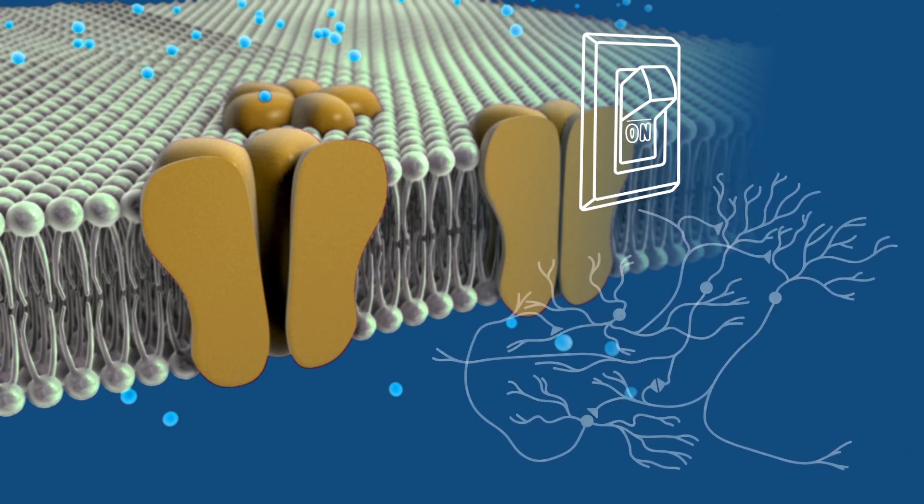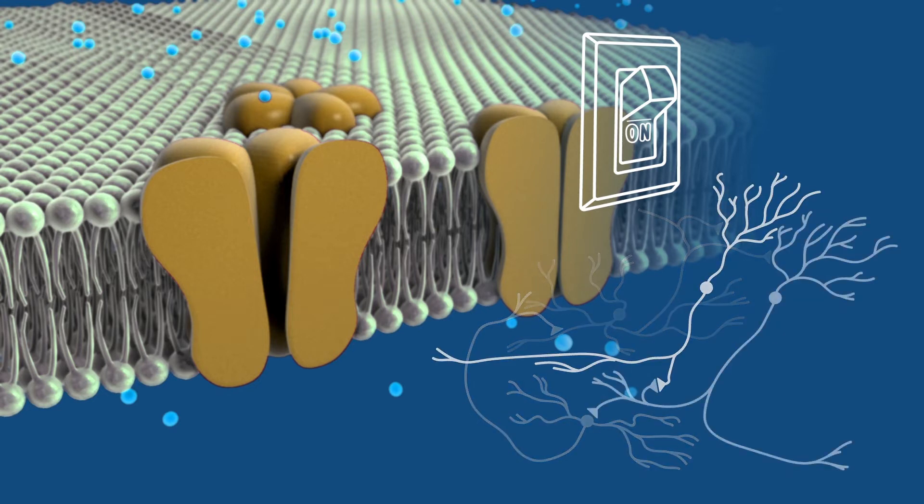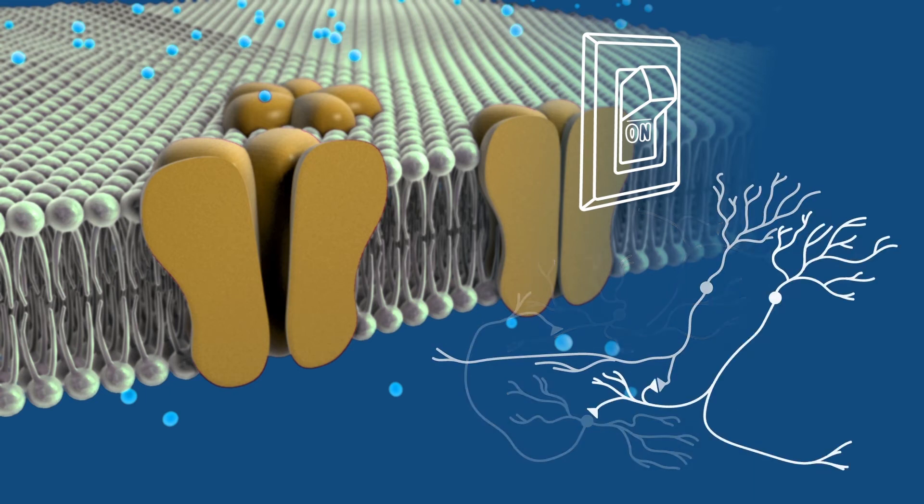If these light-activated channels could be introduced into neurons, then perhaps scientists could turn neurons on by simply shining a light. That kind of control could help scientists determine which neurons were talking to each other and map the brain's neural circuits.